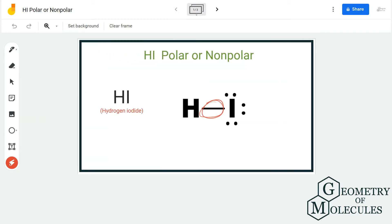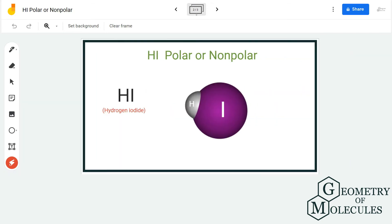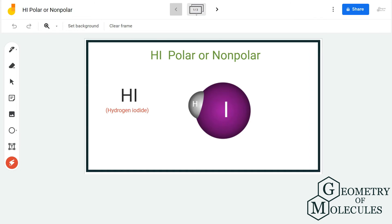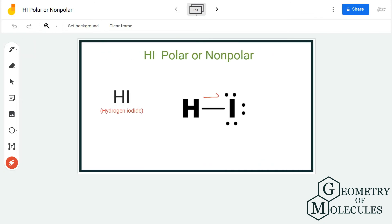As it is a polar bond, the iodine atom will have more pull on the shared valence electrons between hydrogen and iodine, as it is the more electronegative atom. Generally, atoms which are more electronegative in nature tend to pull the shared electrons towards themselves.